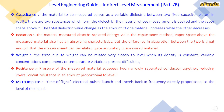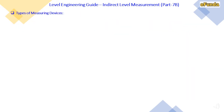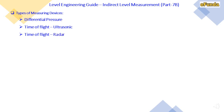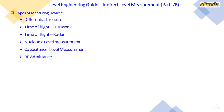Micro impulse (time of flight): electrical pulses are launched and travel back at a frequency directly proportional to the level of liquid. The types of level measuring devices include: differential pressure type, time of flight ultrasonic, time of flight radar type, nucleonic level measurement, capacitance level measurement, and RF admittance.